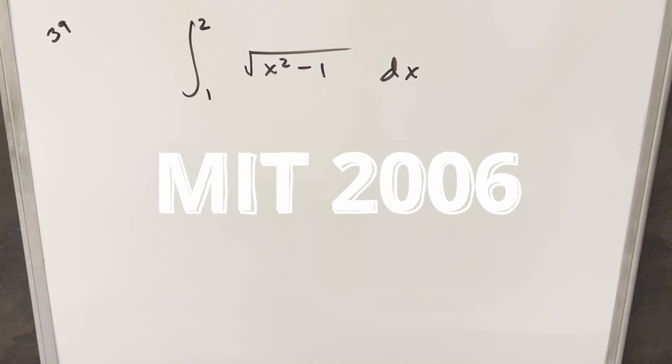Okay, we have a pretty straightforward looking integral from the MIT integration meet 2006. This one's number 39. We have the integral from 1 to 2 of square root of x squared minus 1 dx.